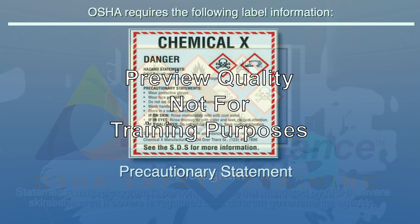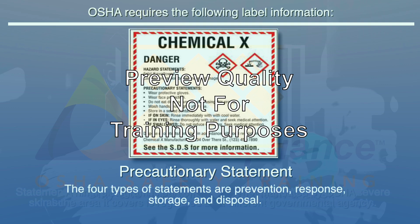Each label and SDS must have a precautionary statement — a phrase describing recommended measures to be taken to minimize or prevent adverse effects resulting from exposure to the hazardous chemical or improper storage and handling. There are four types of precautionary statements used on labels: prevention, response, storage, and disposal.